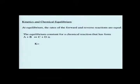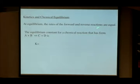We can now talk about big letter K, which is our equilibrium constant again, and our little letter Ks, which are our rate constants. The equilibrium constant for a chemical reaction A + B ⇌ C + D is going to be equal to what?